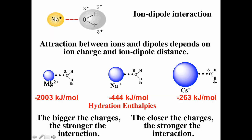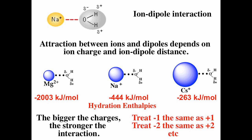The bigger the absolute value of the charge on the ion, the more negative the hydration enthalpy, and the stronger the ion-dipole interaction. For example, magnesium²⁺ has a hydration enthalpy of −2,003 kJ/mol. A minus-2 ion would also have a large hydration enthalpy. The more negative the hydration enthalpy, the larger the ion-dipole interaction. The smaller the ion, the closer it can get to the water, the stronger the interaction, and the more negative the hydration enthalpy. Treat −1 the same as +1, and −2 the same as +2 — what matters is the absolute value of the charge.